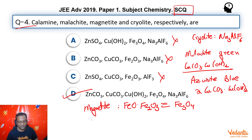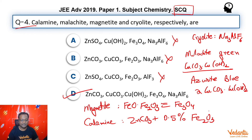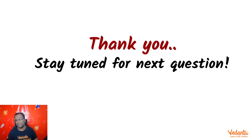Calamine is essentially zinc carbonate with a very little amount of ferric oxide in it. So with this we get the answer D. Thank you so much for joining us — stay tuned for the next question.